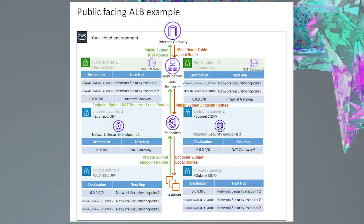If you're looking to do something different, you will need to look into one of our other deployment models to set up your environment. This tutorial uses an example for two availability zones, but if you have additional availability zones you would like to protect, you will need additional network security endpoints for each extra availability zone and also additional route table changes, which will be mentioned.